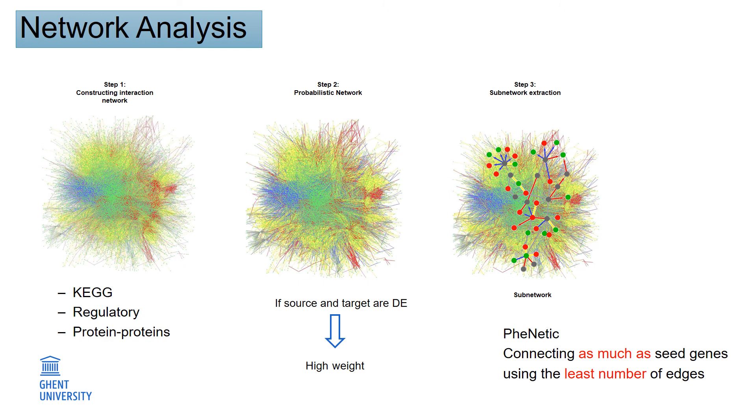Heinz extracts subnetwork or connected component by connecting as many seed genes as possible using the least number of edges.